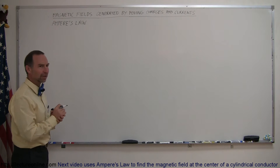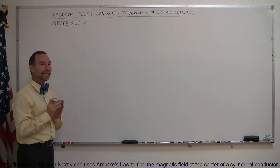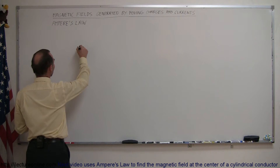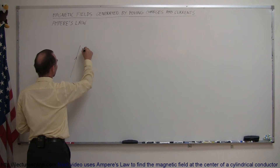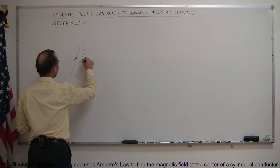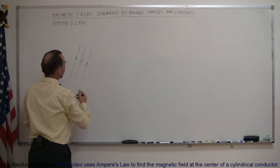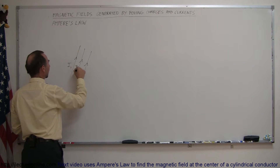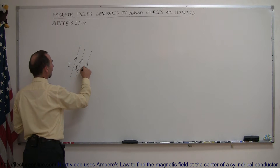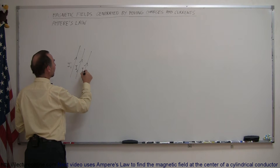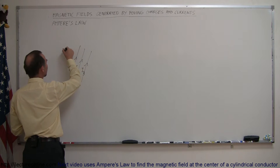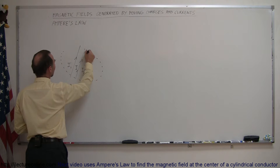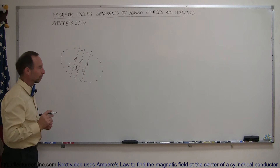So what is Ampère's law? He discovered that if we had a set of currents in a particular area — let's say three conductors side by side, and they each carry a certain amount of current, I1, I2, and I3 — and if we drew an imaginary circle around those three currents...